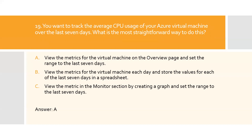Question nineteen: You want to track the average CPU usage of your Azure virtual machine over the last seven days. What is the most straightforward way to do this? A) View the metrics for the virtual machine on the overview page and set the range to the last seven days, B) View the metrics each day and store the values for each of the last seven days in a spreadsheet, C) View the metrics in the Monitor section by creating a graph and set the range to the last seven days. Option A is the right answer. The overview page displays this graph by default and you can set the range to show a seven-day range.